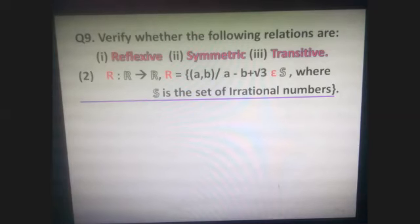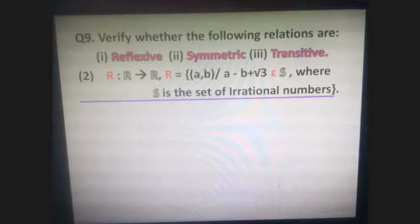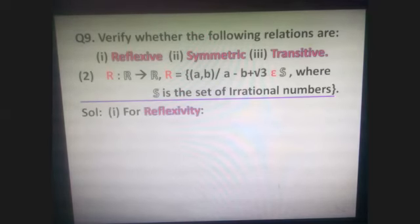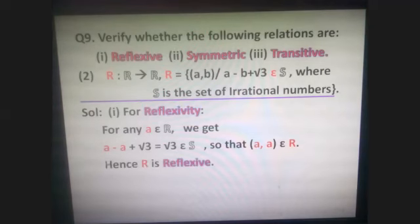Now let us take up a more complicated question — this was a board exam question asked 2–3 years back. Relation R from ℝ to ℝ where R equals the set of (a,b) such that a − b + √3 is an irrational number, where S denotes the set of irrational numbers. For reflexivity: for any real number a, a − a + √3 = √3, which is irrational. So (a,a) ∈ R for all a ∈ ℝ, and the relation is reflexive.